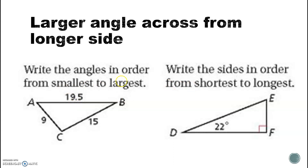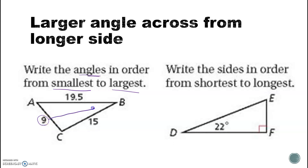You'll see questions that ask you to order angles or sides from smallest to largest or largest to smallest. This example asks for angles from smallest to largest, but gives us sides. They go together, so if this is my smallest side, traveling across, angle B is going to be my smallest angle.